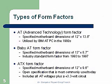Types of form factors: The AT, or Advanced Technology form factor, specified a motherboard design of 12 by 13.8 inches and was utilized by the IBM AT PC in the 1980s. The Baby AT form factor came out at 13 by 8.7 inches — considerably smaller — and was the industry standard from 1993 to 1997, about 4 years. Form factors don't change that often.